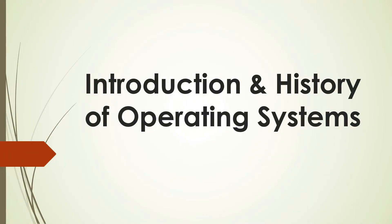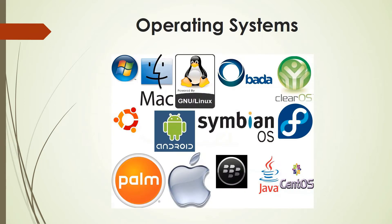We will see an introduction and history of operating systems. On the screen you will see some operating systems like Windows, Mac OS, Linux, Bada (used for Samsung mobile phones), Ubuntu, Android, Symbian (used in Nokia mobile phones), Palm OS, Apple iOS for iPhones and iPads, BlackBerry, Java OS, and Cent OS. These are some of the operating systems. Now the question comes: what is an operating system?